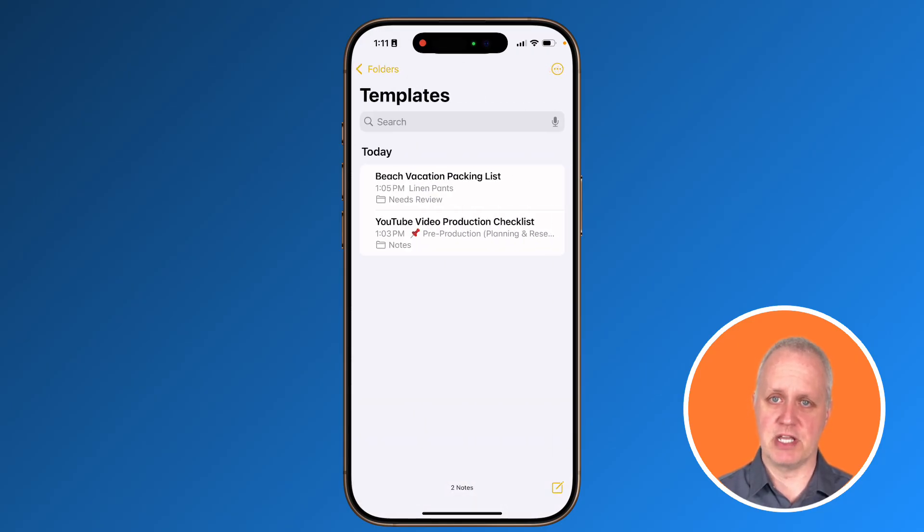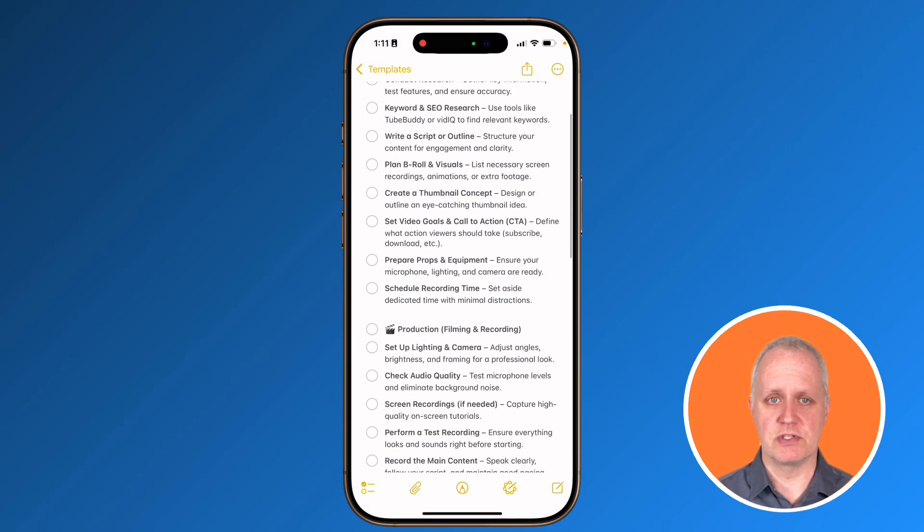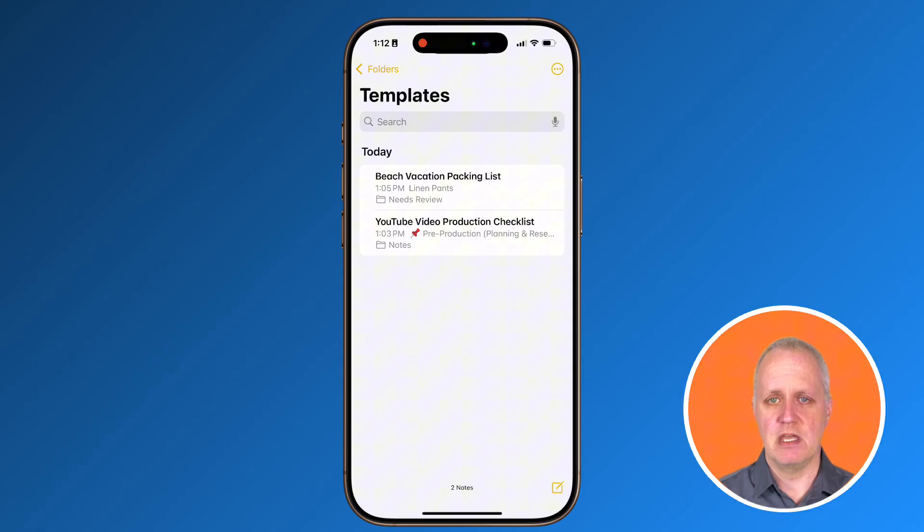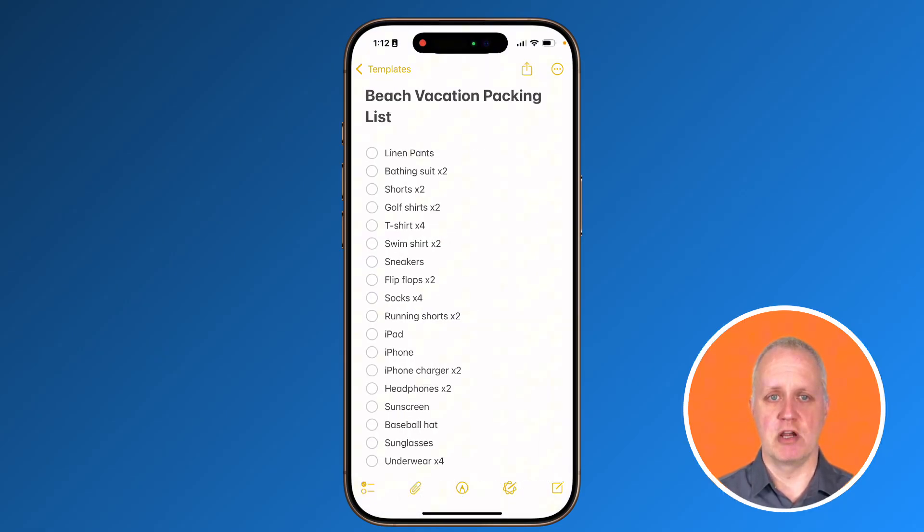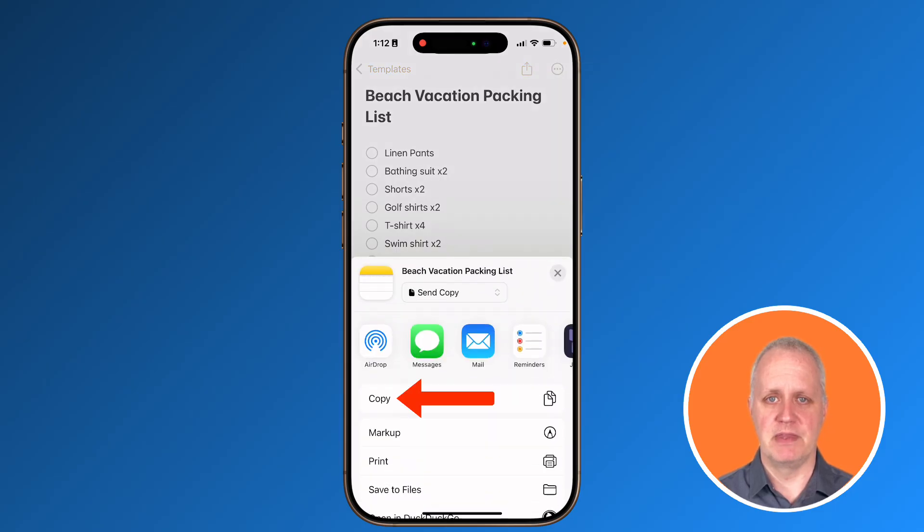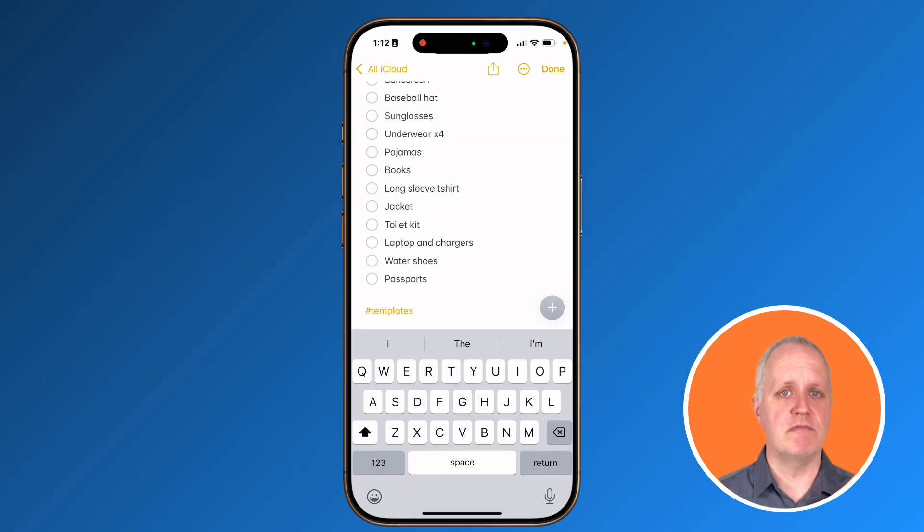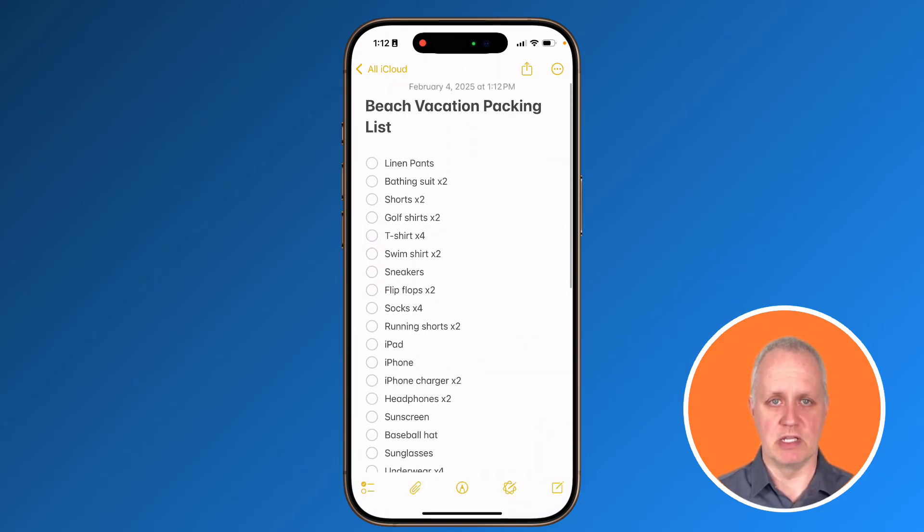Add headings for sections, for instance, to-do, notes, or reminders. Include lists, tables, or even embedded images. Now save the note. And when you want to use the template for a new note, open your template, tap the share button, and select copy. Now start a new note and press and hold the screen and select paste. You can now update your info and then move it to a folder you like.